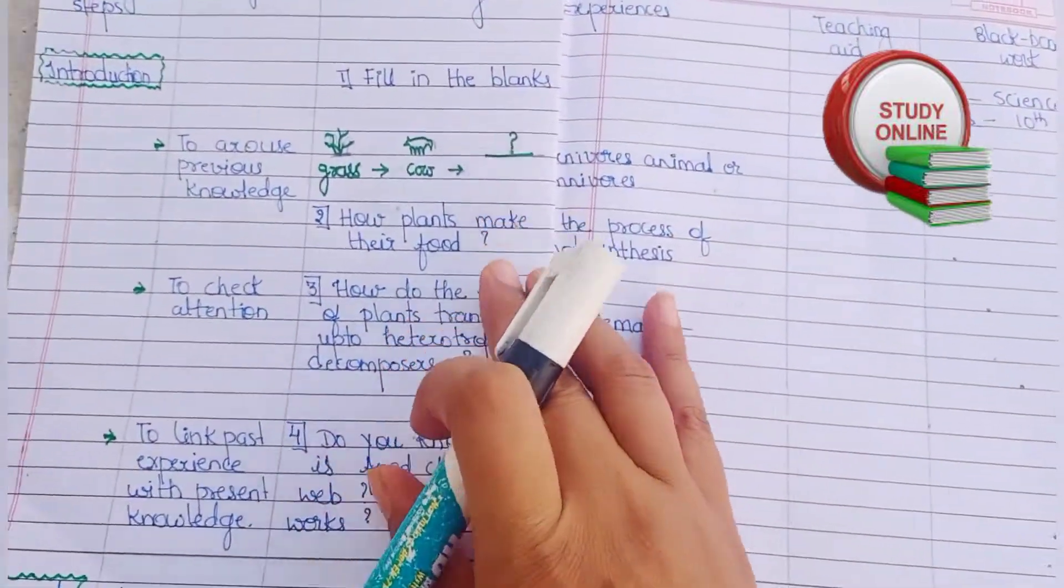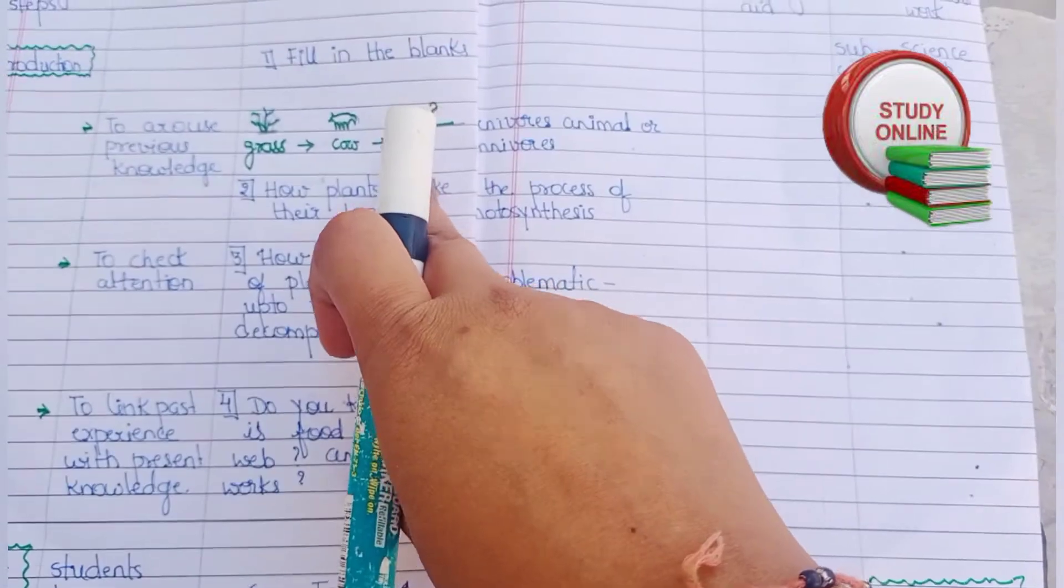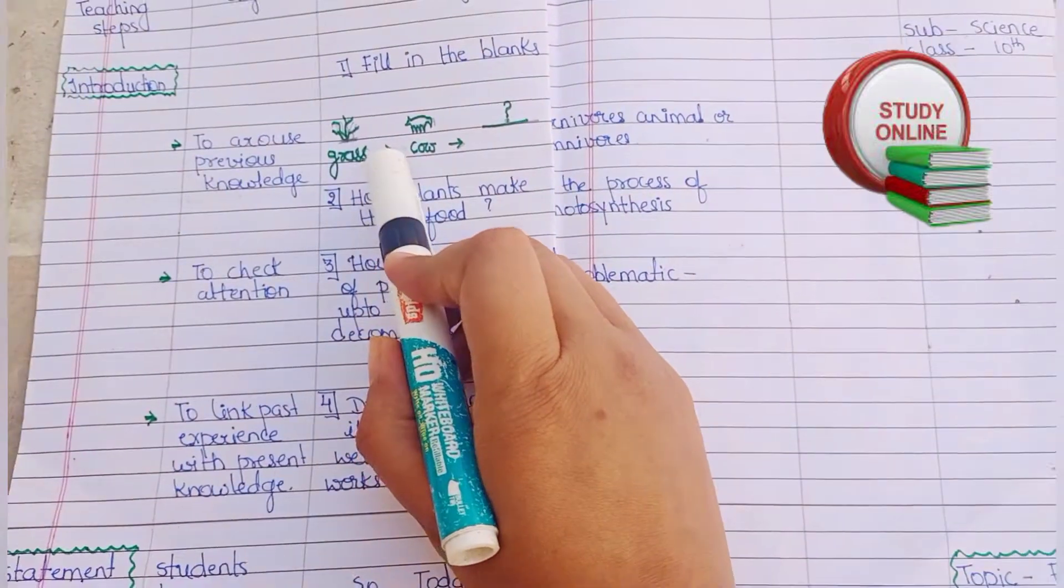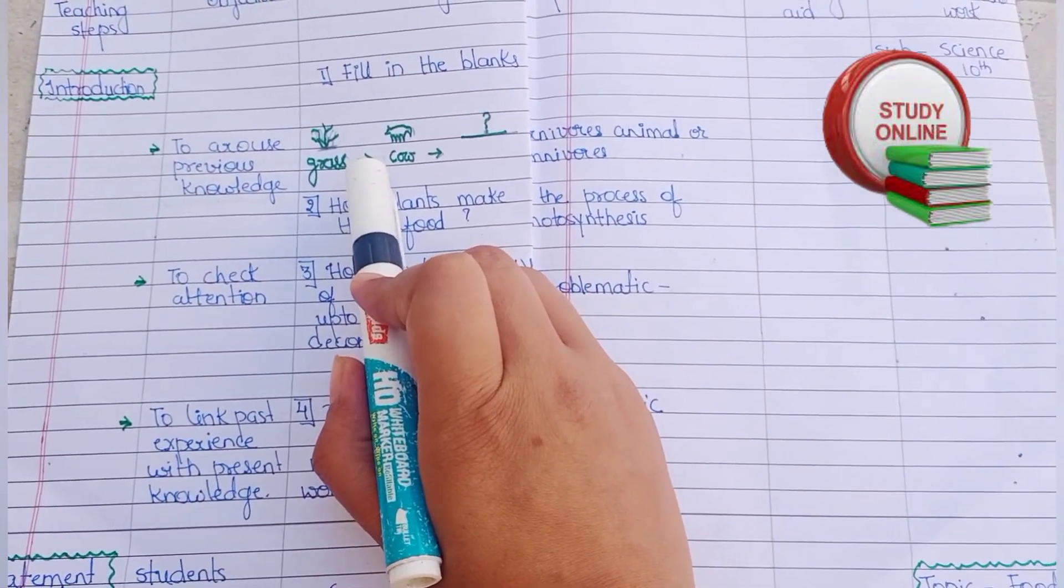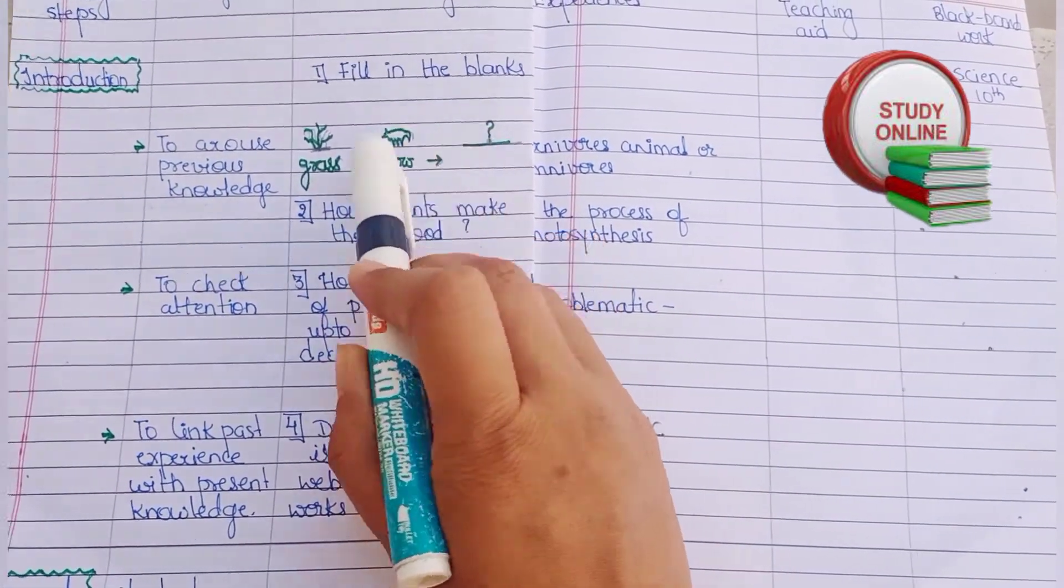Now this is the introduction part. You can see here I have added the first question. We have to make a link to the food chain and ask: grass is eaten by cow, and who eats cow? Students will answer carnivorous or omnivorous animals.